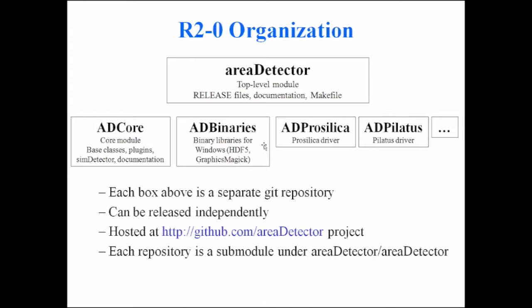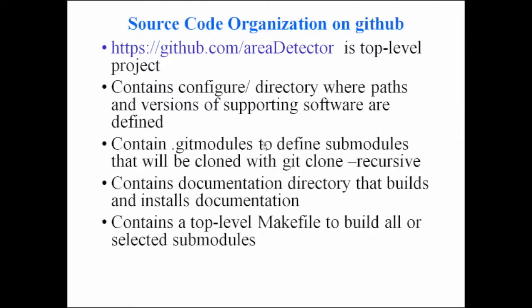For those familiar with Git, each of these is a Git submodule. If you do a 'git clone --recursive' of area detector, you get all the modules. But you don't have to — you can clone the top level and then only clone whichever drivers you need. The only things required are the top-level module plus ADCore plus whatever driver you're interested in.